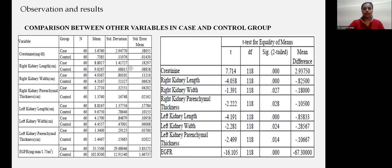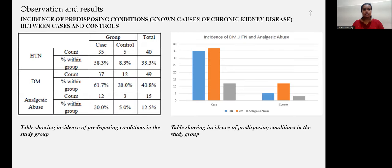Here is the table comparing cases and control groups across various parameters including kidney length, width, renal parenchymal thickness, creatinine values, and eGFR values. Additionally, a table provides the incidence of predisposing conditions such as diabetes mellitus, hypertension, and analgesic abuse in the case and control groups, with incidence found to be higher in the case group.